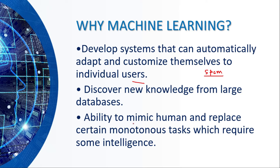The third point is that machine learning is able to mimic human behavior. It tries to learn as humans do, though humans are far more advanced in learning. Machines have more computing power, but in terms of learning humans are way ahead. Today's machines work on certain simple algorithms. Machine learning can mimic humans and replace certain monotonous tasks requiring intelligence — for example, handwriting recognition, face recognition, and speech recognition.